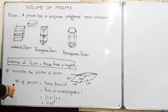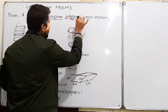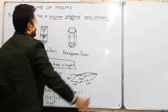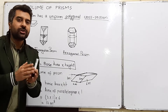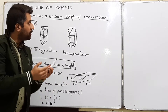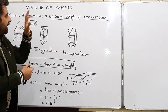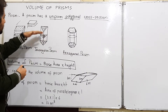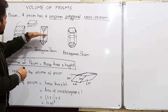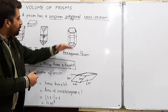So all of these are prisms. A prism has a uniform polygonal cross section. Here, 'uniform' means the cross section will not change; 'polygonal' means we have polygons; and 'cross section' means when you cut it horizontally, the shape will be the same as the top or at the bottom.